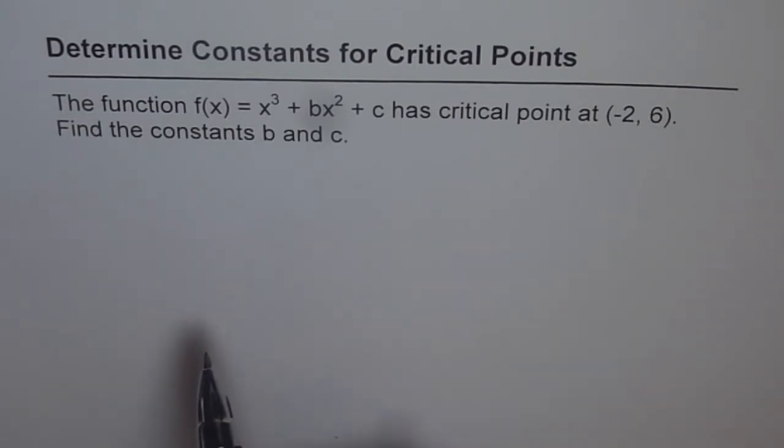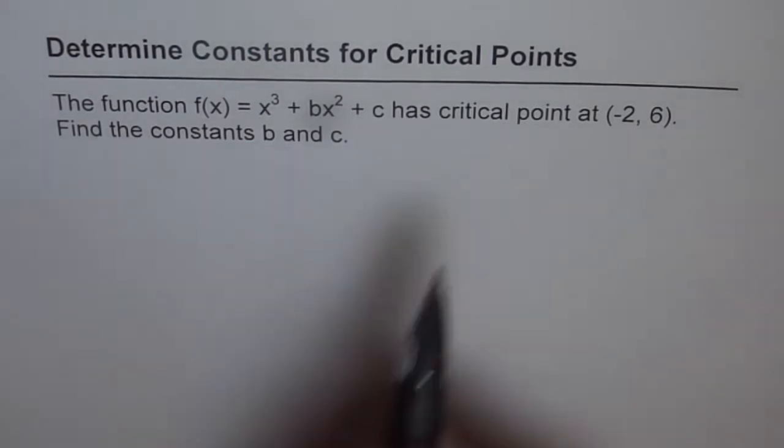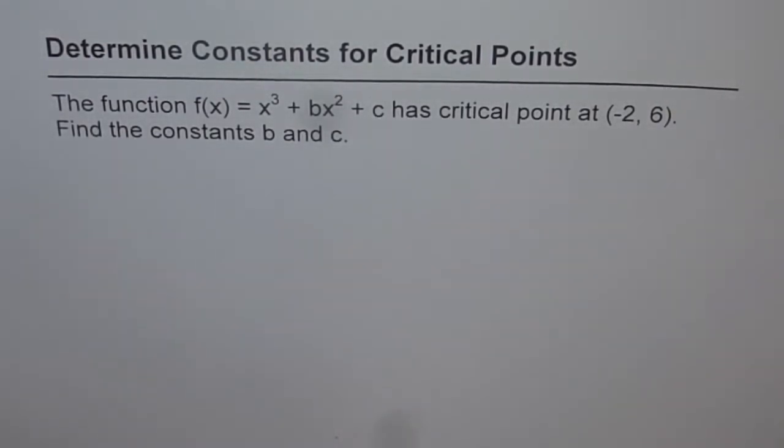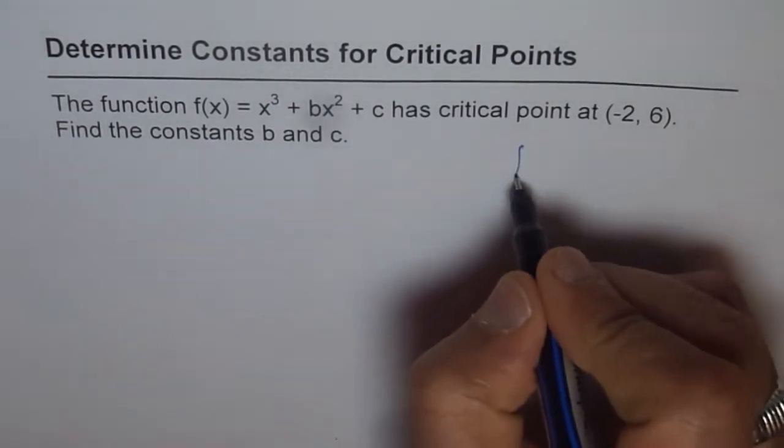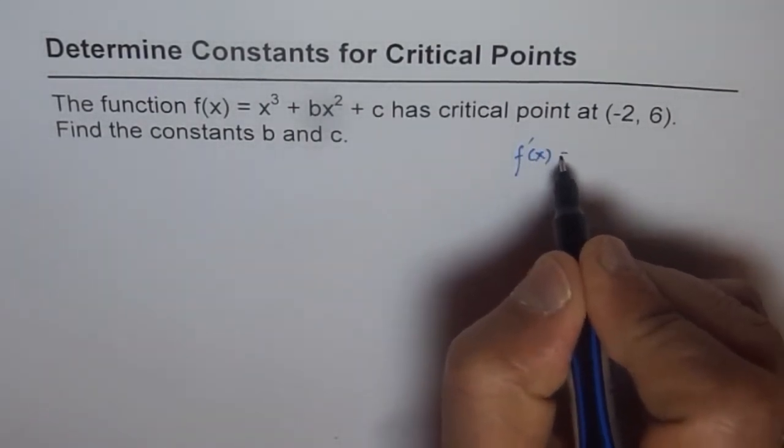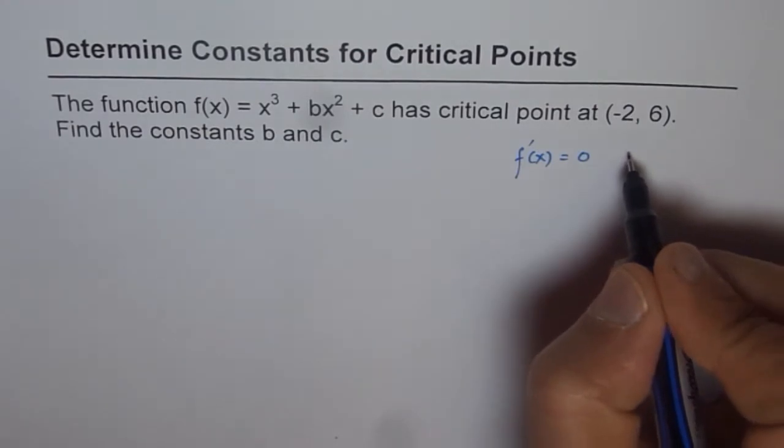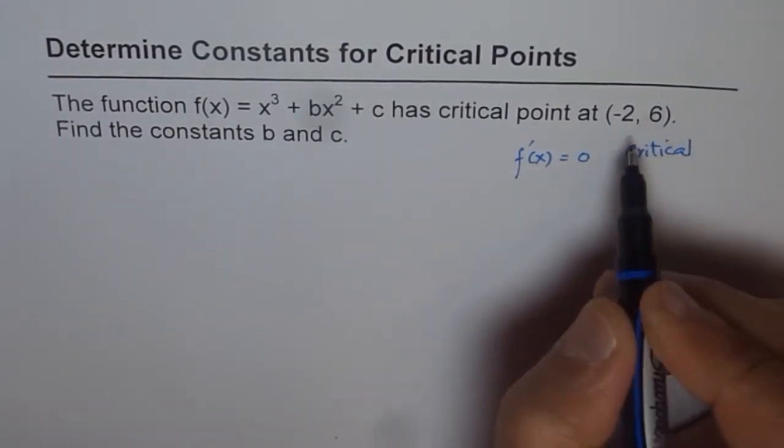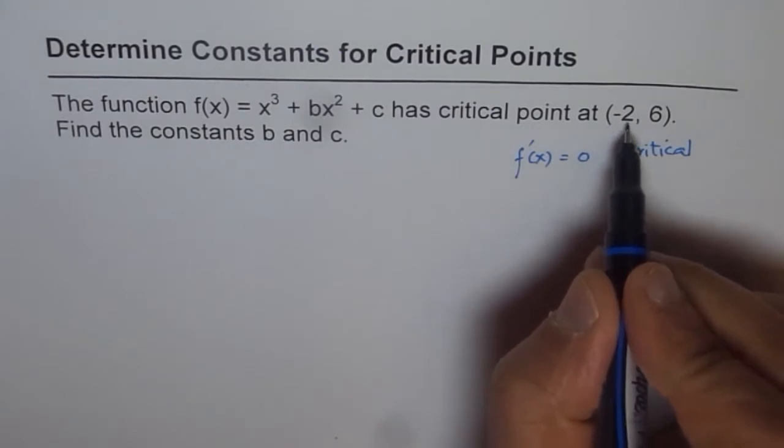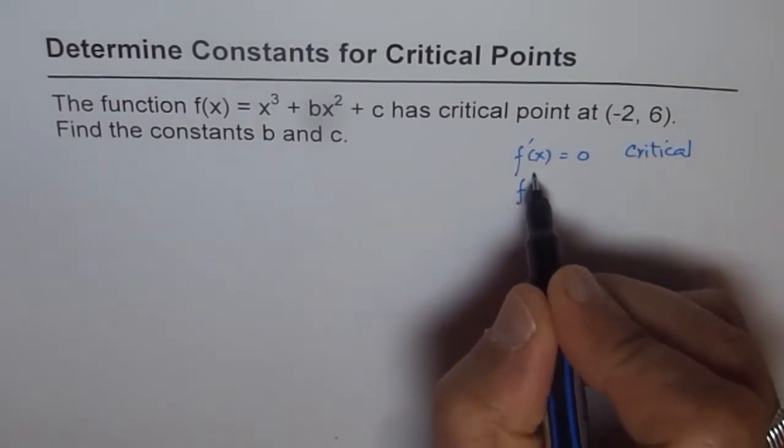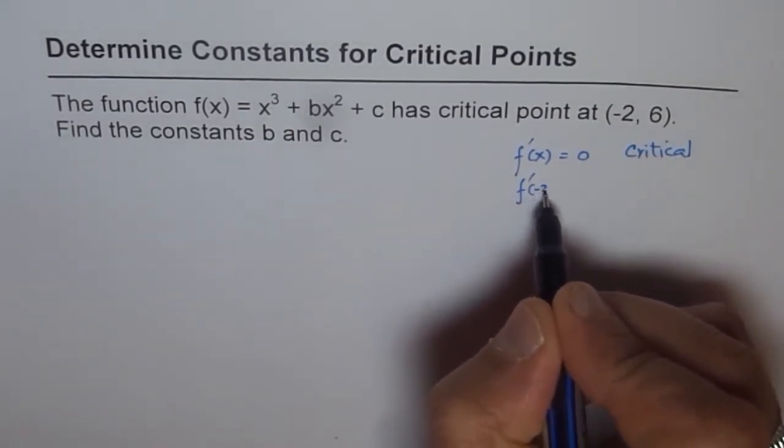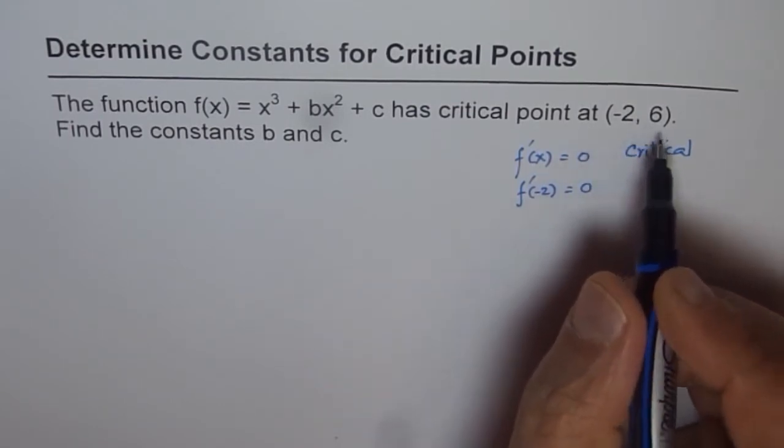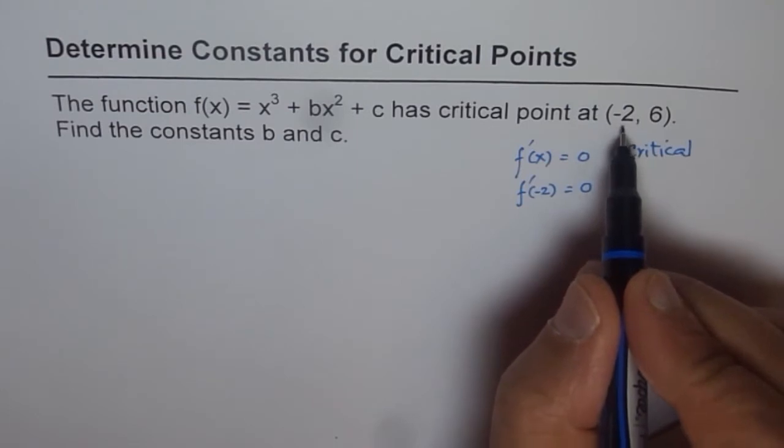Now what is a critical point? Critical point is a point where the first derivative is 0. So let us write down that first part. That means first derivative of x equals to 0, that means we have a critical point. Now it is given to us that critical point is at (-2, 6). That means basically first derivative at -2 is equal to 0. That means the function has a horizontal tangent at x equals to -2.